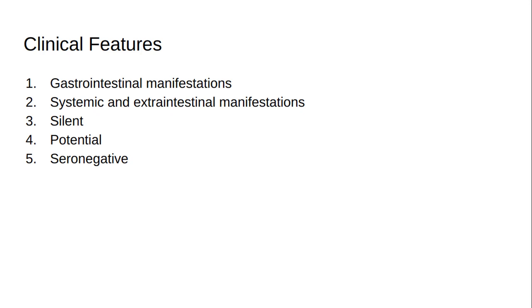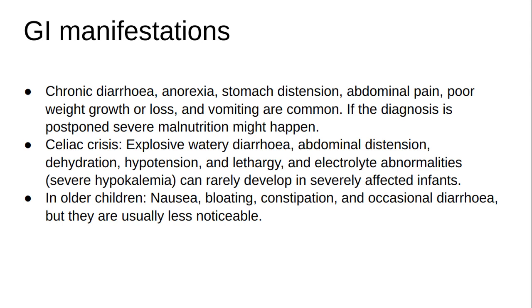Five possible presentations of celiac disease are recognized: gastrointestinal manifestations; systemic and extraintestinal manifestations; silent — damaged small intestinal mucosa with positive serology but no symptoms; potential — positive serology and may or may not be symptomatic, but the mucosa morphology is normal, with genetic compatibility and risk of developing disease at a later stage; and seronegative — patients who exhibit clinical and histologic responses to the gluten-free diet, with villous atrophy, compatible genetics, and no IgA-TTG, IgA-DGP, or IgA-EMA.